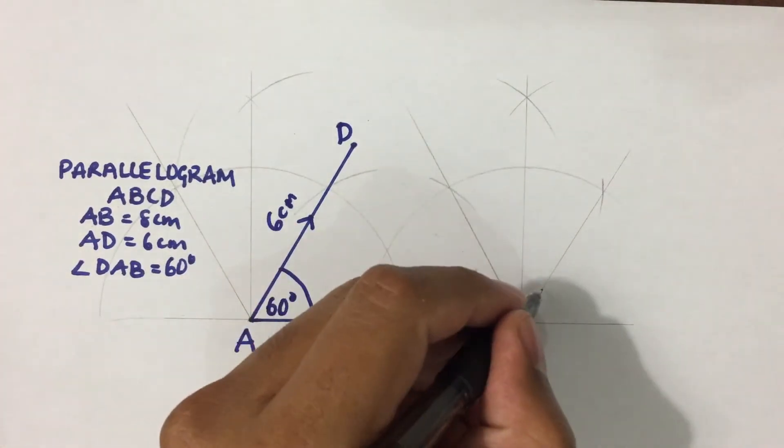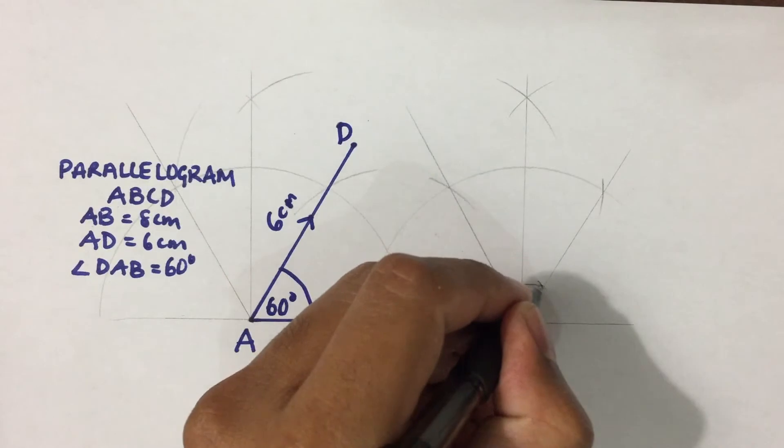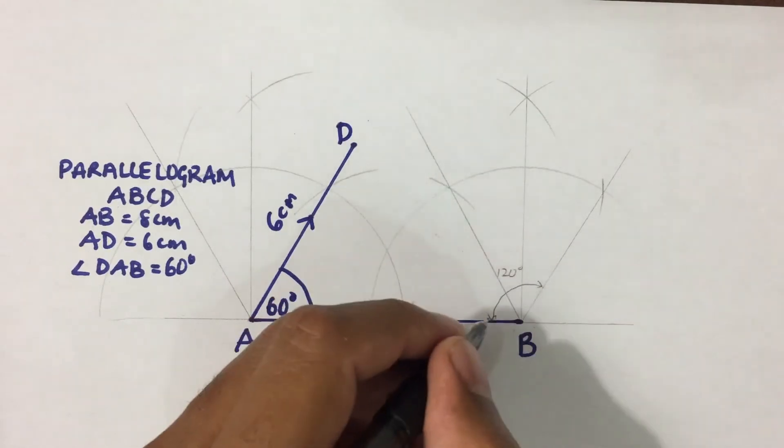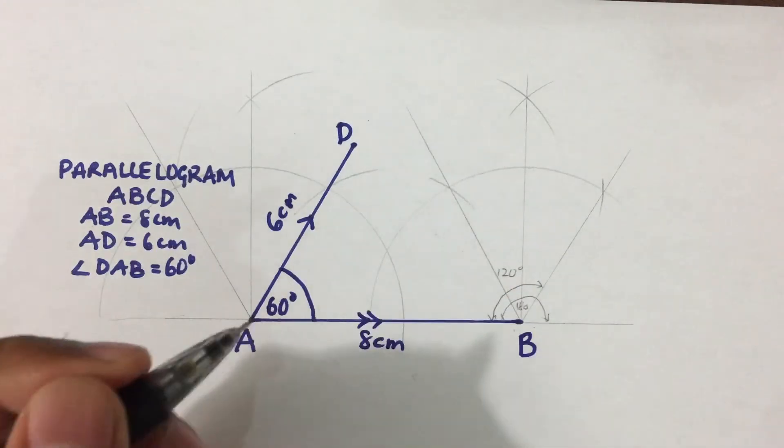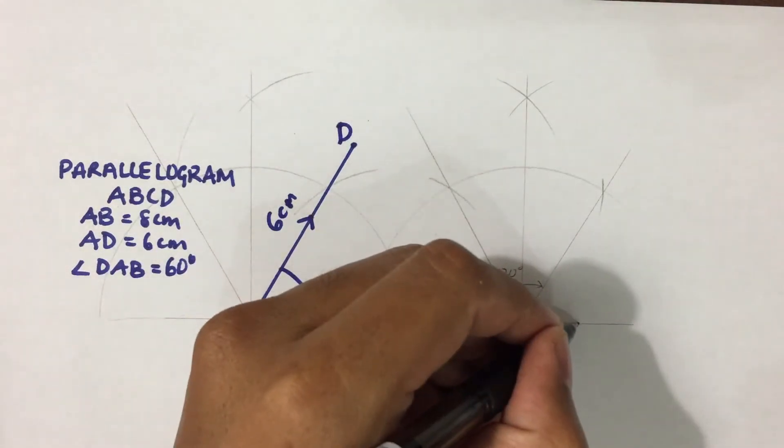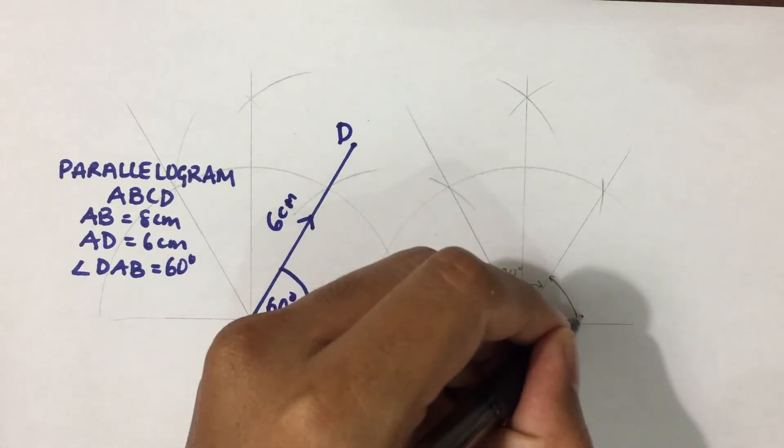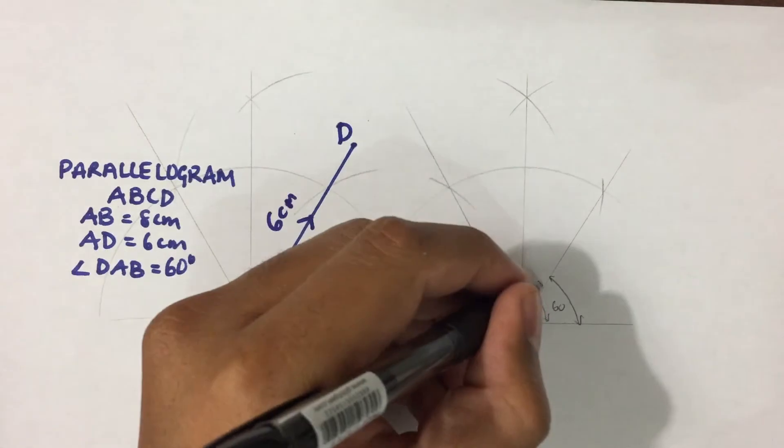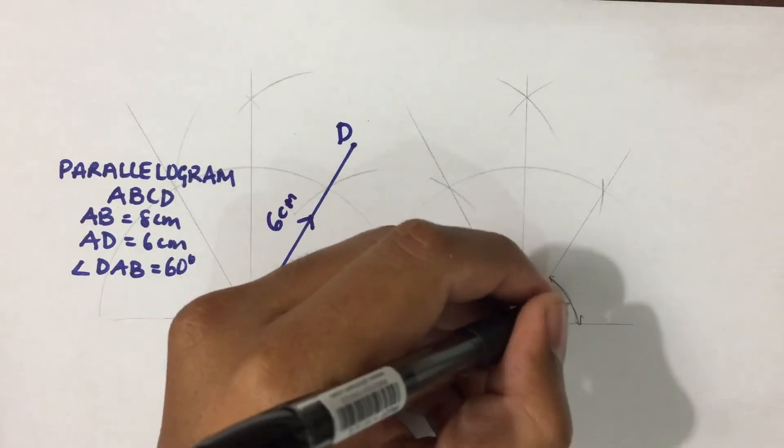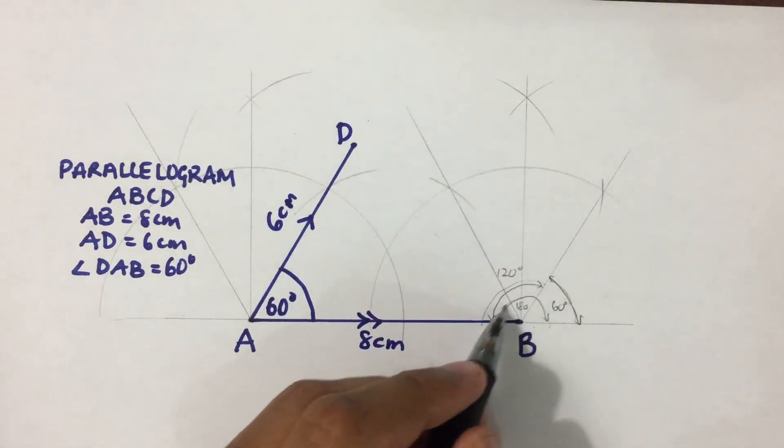Now, we know that we had constructed a 120 degree angle here. And we know that for a straight line, the angle is 180 degrees. Therefore, from here to here would be 60 because 120 degrees plus 60 degrees is equal to a straight line.